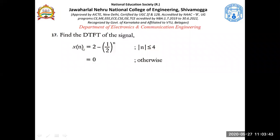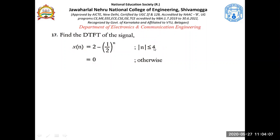This is the problem where we are asked to find the DTFT of signal x, which is given as 2 minus (1/2)^n for magnitude n less than or equal to 4. The condition |n| ≤ 4 means the signal is defined for n less than or equal to 4 and for n greater than or equal to minus 4.